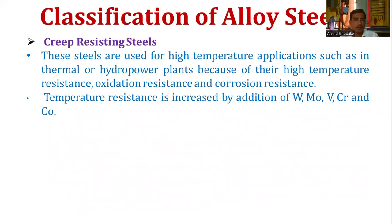The next classification is creep resisting steel. These steels are used for high temperature applications such as in thermal and hydro power plants, because of their high temperature resistance, oxidation resistance, and corrosion resistance. Temperature resistance is increased by addition of tungsten, molybdenum, vanadium, chromium, and cobalt.